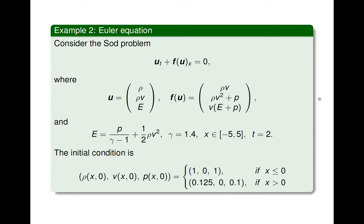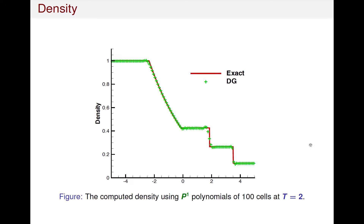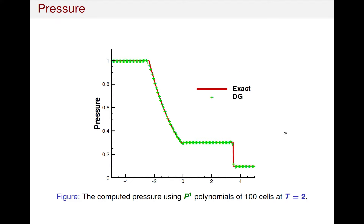Next, we consider a system case. We consider the standard Sod problem, which is a Riemann problem. We use DG methods with piecewise linear polynomials and compute until t equals 2. We use the solid line to denote the exact solution and the green sign to denote the DG solution. From the figure, we can see that we get a good approximation in smooth regions. Moreover, we can get a sharp and non-oscillatory shock transition near discontinuities. The result about pressure is also very nice. This demonstrates that the DG method is very useful for computing shocks.